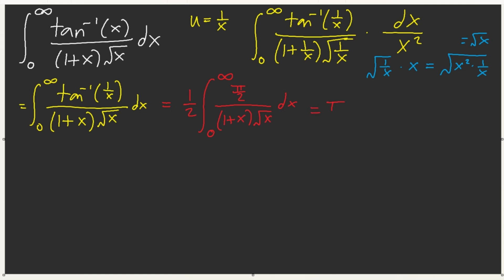So this is pi over 4. And then, of course, we know what this is. This is 2 inverse tangent of root x, 0 to infinity. And then, plug in 0, it's 0. Plug in infinity, you get pi over 2.